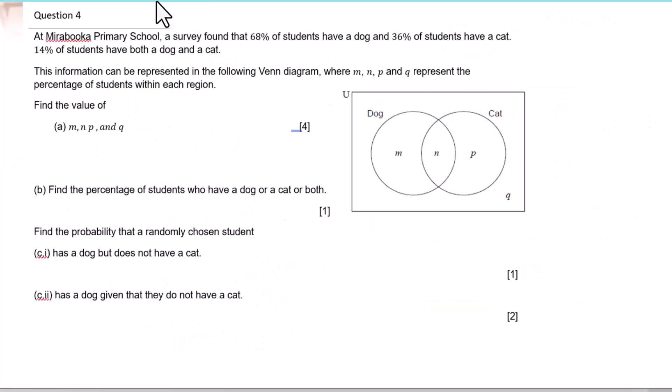Question 4. At a primary school, a survey found that 68% of students have a dog and 36% have a cat, and 14% have both a dog and a cat. This information is represented in a Venn diagram where M, N, P, and Q represent the percentage of students in each region. N equals 14%, which we've already figured out.